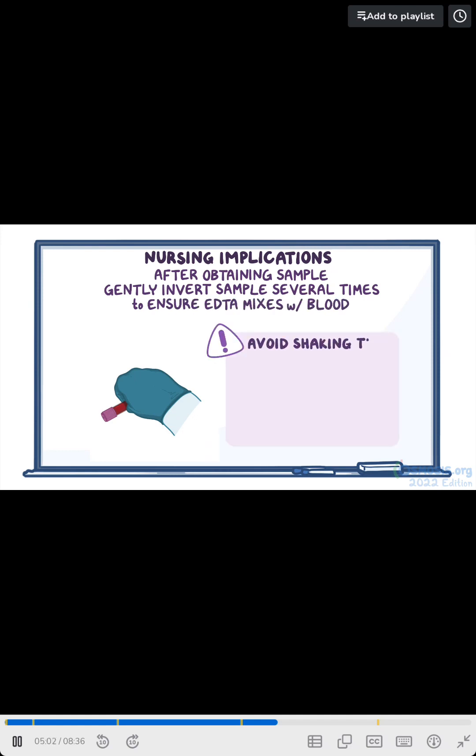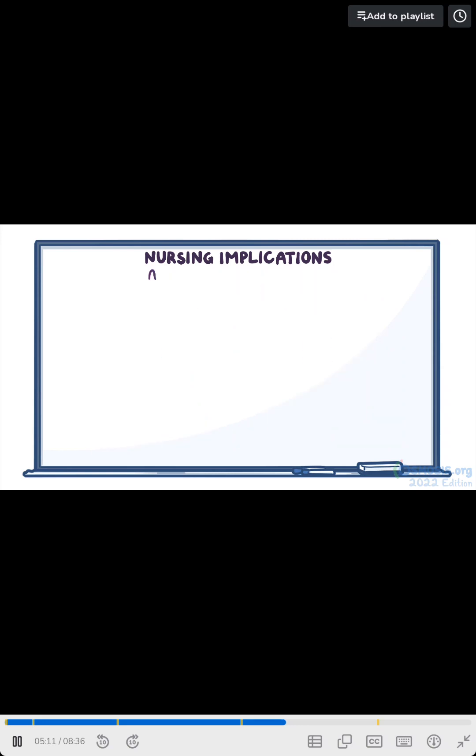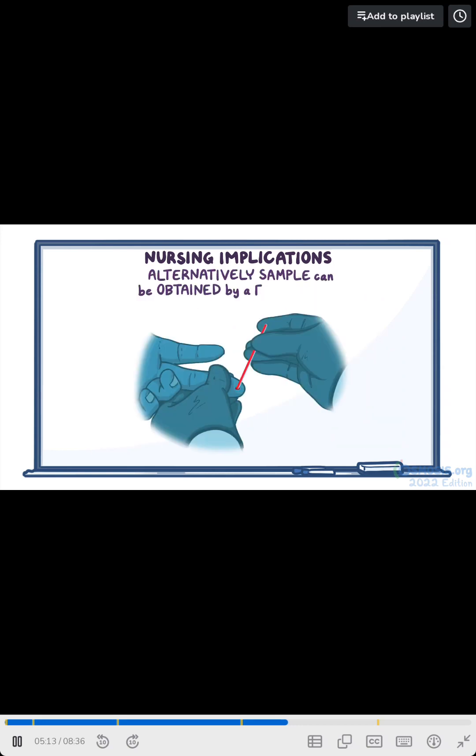But avoid shaking the tube, as this will cause hemolysis or breaking apart of the RBCs, which will alter the results. Alternatively, the sample can be obtained by a finger stick by collecting the blood into a capillary tube.